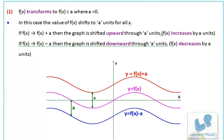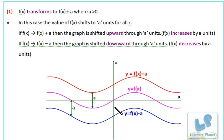When f(x) transforms to f(x) ± a, where a is greater than 0, the value of f(x) shifts by a units for all x. When a is added to f(x), the graph shifts upwards — this gap is a units. And if a is deducted from f(x), then the graph shifts downwards — this gap is also a units. In this case f(x) increases by a units; in that case f(x) decreases by a units.